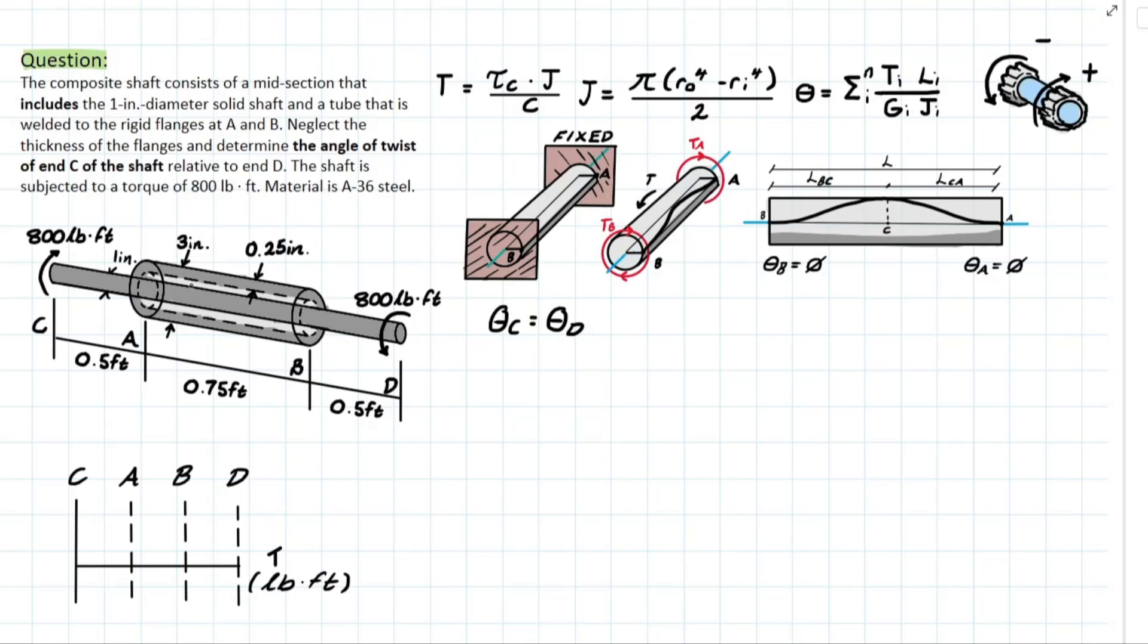But we are still looking at an indeterminate torque load member because we have a very similar situation where we have two unknown internal torques developing in section AB. But why is that? Well normally you'd look at a problem like this and say well the system's in equilibrium. You have equal and opposite torque acting at the same magnitude right? So why is it not in equilibrium?